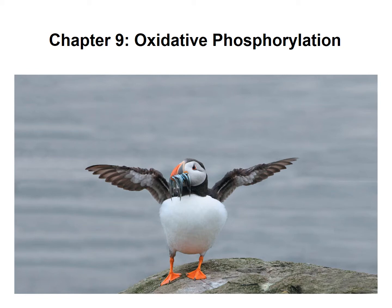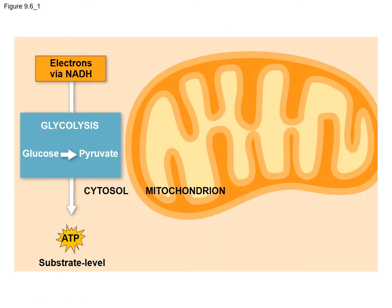We're going to go ahead and talk about the final step in cellular respiration. Just to do a recap of the previous sessions: we have glycolysis. Remember, glycolysis occurs in the cytosol. Glycolysis is a process which starts the breakdown of glucose. However, it's an incomplete breakdown — it basically just splits glucose into three-carbon molecules.